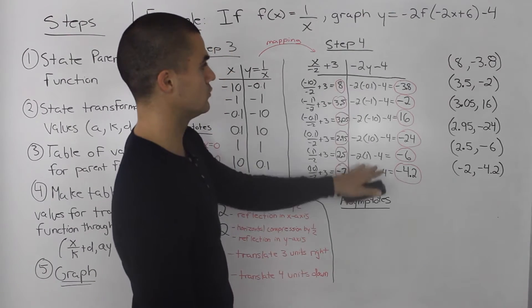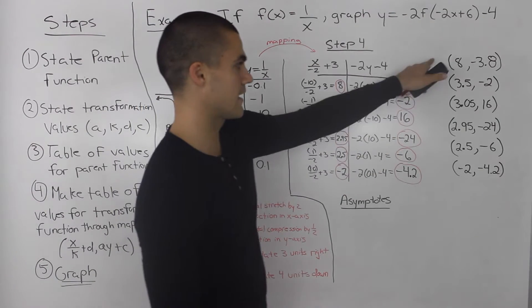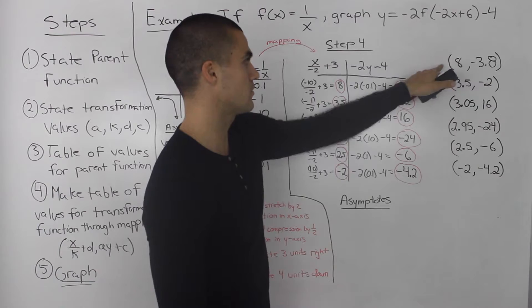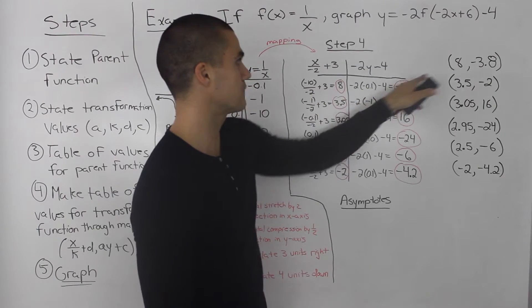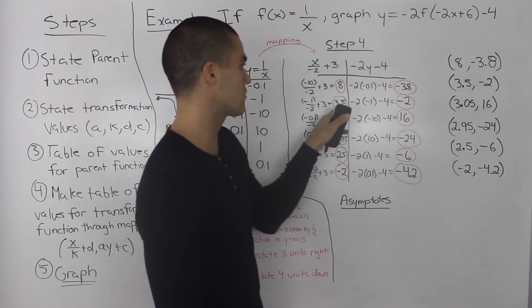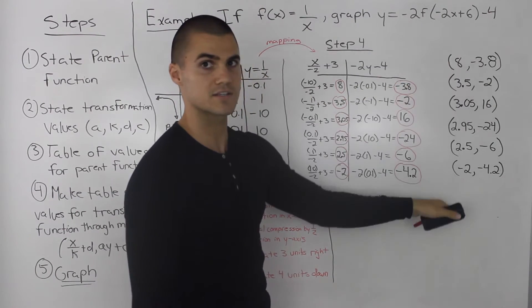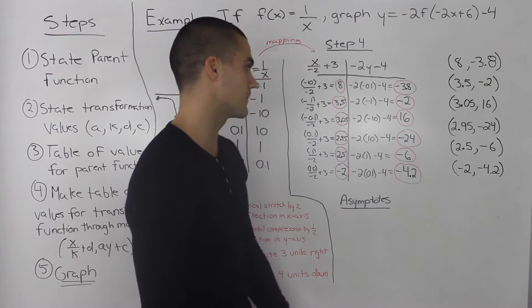I took the new coordinates and made a nice list here: 8 and negative 3.8, 3.5 and negative 2, and so on.